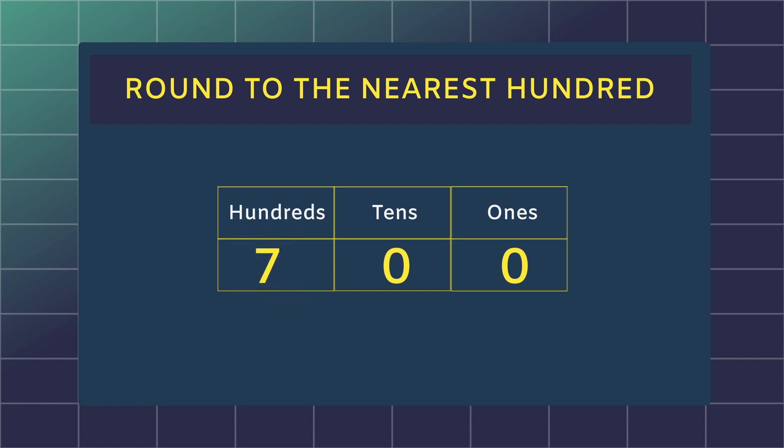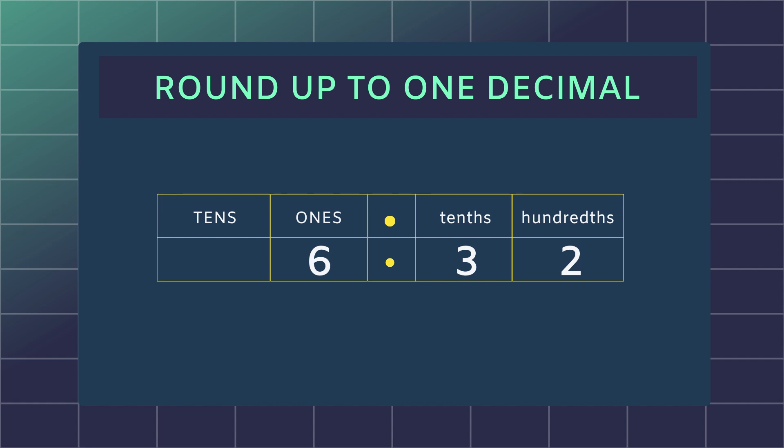Let's put this into practice with decimals. If we want to round 6.32 to one decimal place, which means one digit after the decimal point, we would either round it down to its lower value, 6.3, or round it up to the upper value, 6.4, depending on the value of the second digit after the decimal point.